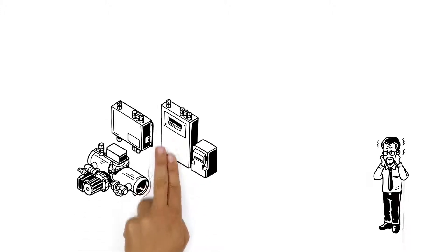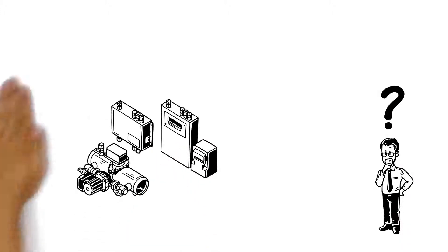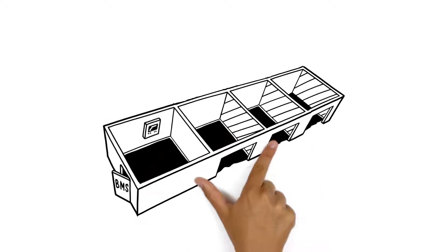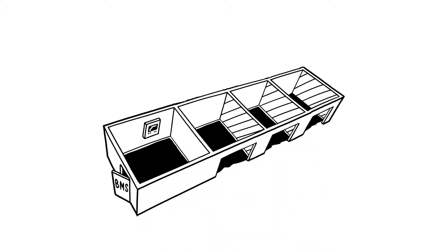He's heard of the new ZoneCheck Addressable, but how does it make his job easier? ZoneCheck Addressable is ideal for any multi-zone property. A central controller is wired via a loop to each ZoneCheck flow switch tester.